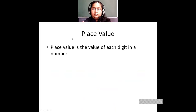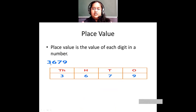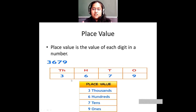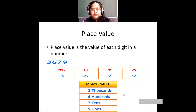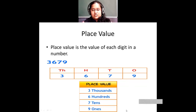Place value is the value of each digit based on its position in the number. Using the same example 3,679: 3 is in thousands place so its place value is 3 × 1,000 = 3,000. For 6 in hundreds place it's 6 × 100 = 600. For 7 in tens place it's 7 × 10 = 70. For 9 in ones place it's 9 × 1 = 9.